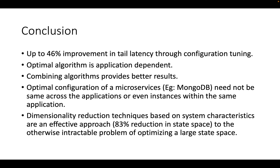Coming to the conclusion: there is up to 46% improvement in tail latency through configuration tuning. The optimal algorithm is application dependent, and combining algorithms provides better results. The optimal configuration of a microservice need not be the same across applications or even instances within the same application. Dimensionality reduction techniques based on system characteristics are an effective approach to the otherwise intractable problem of optimizing a large state space.